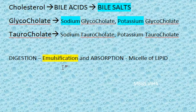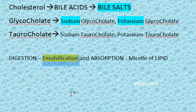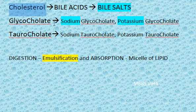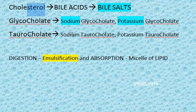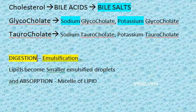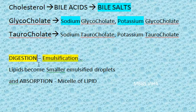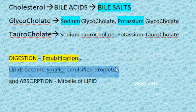Bile salts are called biological detergents because they work like soaps — they perform emulsification. They are synthesized from cholesterol in the liver, and because they are manufactured from cholesterol, bile salts have a steroid nucleus. They act as the best biological emulsifying agent, breaking lipids into smaller emulsified droplets — that is digestion.